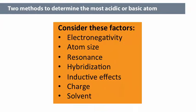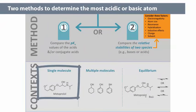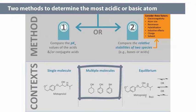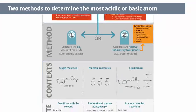To do so, we consider various factors, including electronegativity, atom size, resonance, hybridization, inductive effects, charge, and solvent. We will see how to use these methods to identify the most acidic or basic atom in a single molecule, between molecules on their own, or between molecules in an equilibrium. In principle, both methods can be used in any situation, although it's often more straightforward to use one method or the other.